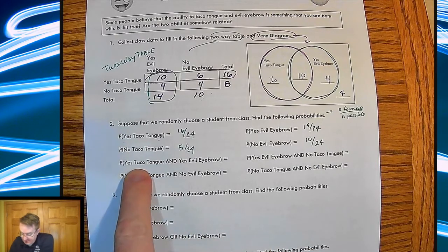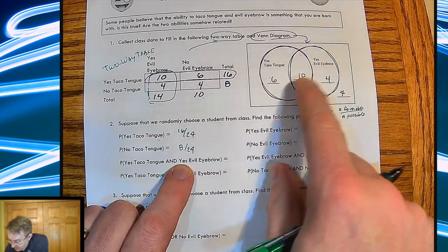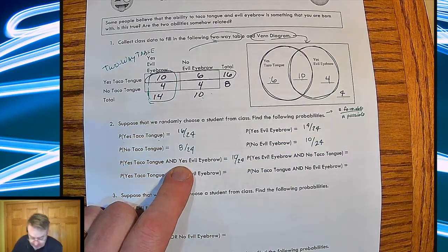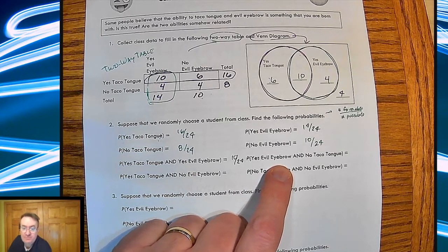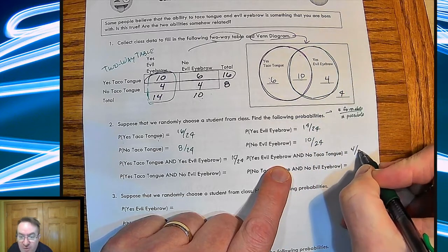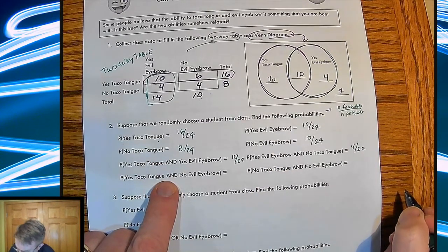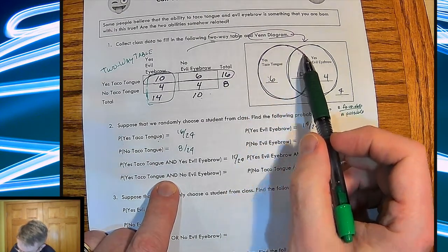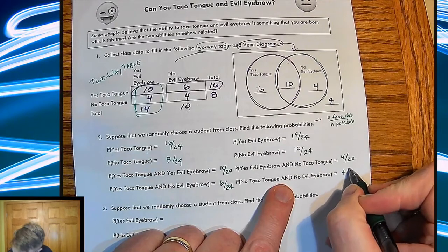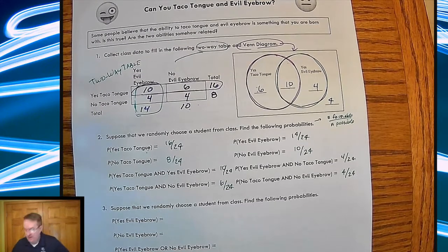All right. What's the probability that yes, taco tongue and yes, evil eyebrow? So yes, taco tongue. Yes, evil eyebrow. That's two. So that's 10. So that's going to be 10 out of 24. What's the probability that we get evil eyebrow and no taco tongue? So that would be what? Evil eyebrow, but no taco tongue. So that would be in that four out of 24. Yes, taco tongue and no evil eyebrow. Yes, taco tongue, no evil eyebrow. So this is evil. So I'm going to go for those six. And then leftovers. Everybody else is the no taco tongue, no evil eyebrow setup. And that's four out of 24.